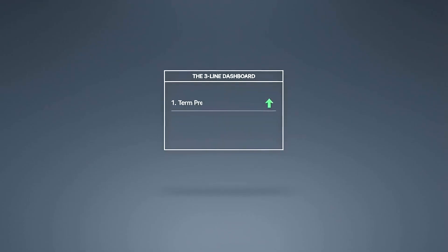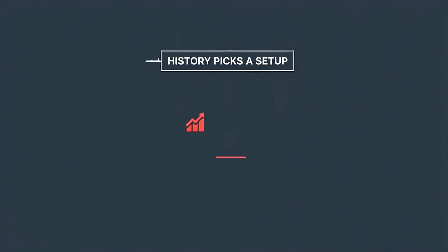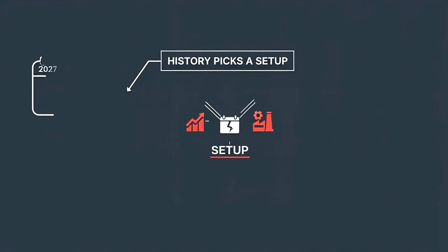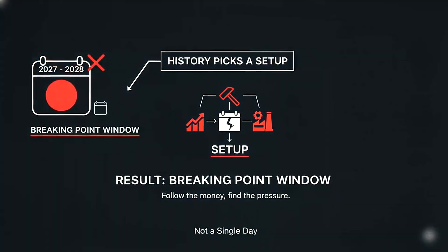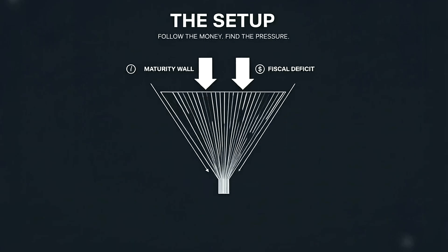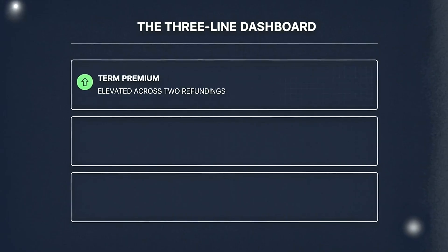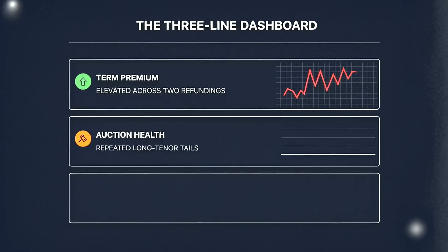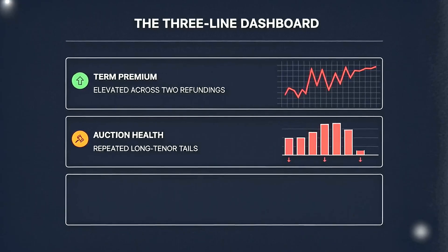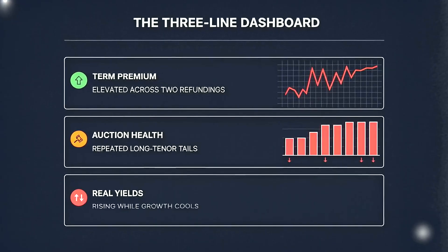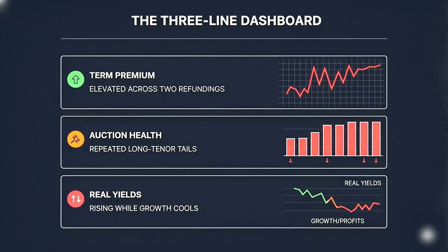Coming up: the closing framework and the three-line dashboard to keep handy. The result: a path that points to a breaking-point window rather than a single day. History rarely picks a calendar square in advance — it picks a setup. This is the setup. Follow the money, find the pressure. The three-line dashboard: term premium elevated across two refundings with no sustained retreat. Auction health — repeated long tenor tails and heavy dealer takedowns. Real yields rising while growth and profits cool across the median firm.